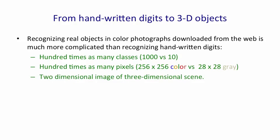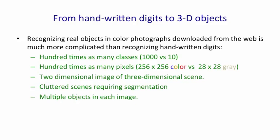In real scenes you have to deal with the fact that you have a two-dimensional image of a three-dimensional reality, so a lot of information has been lost. Real scenes also have clutter that doesn't occur in handwriting. In handwriting you can have overlapping letters requiring segmentation, but you don't have occlusion of large parts of objects by opaque other objects, many different object types in the same scene, or all the lighting variations that you get in real scenes.